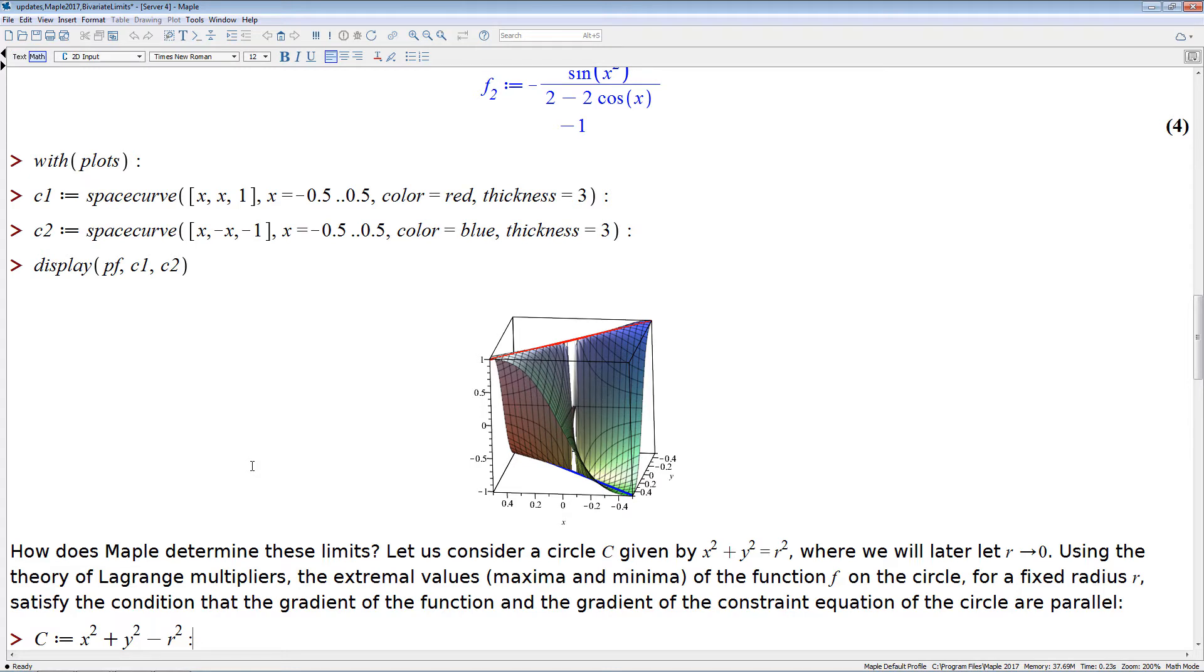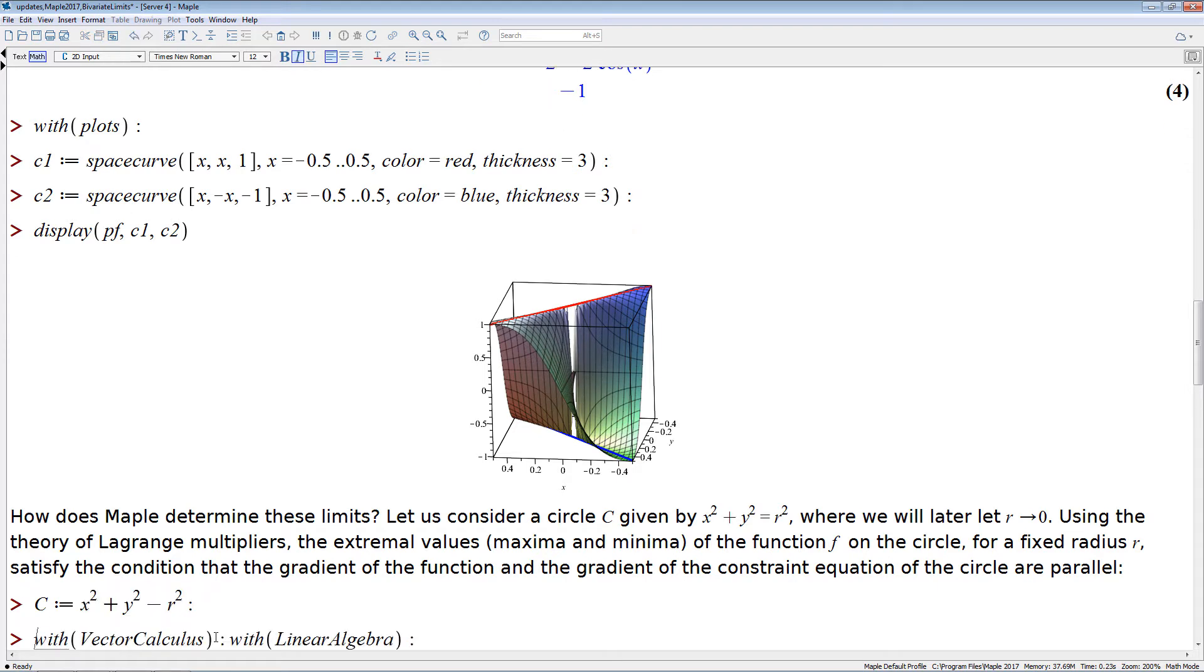So the way this is done is in our minds, we take a circle around the origin which is the limit point of radius r. So it's given by this equation here, x squared plus y squared minus r equals zero. So we define that equation. And then this is a well-known theory in constraint optimization.